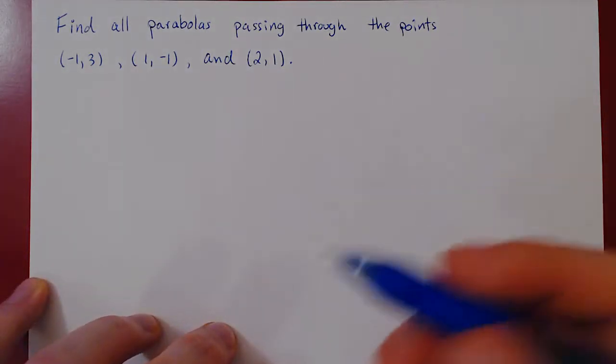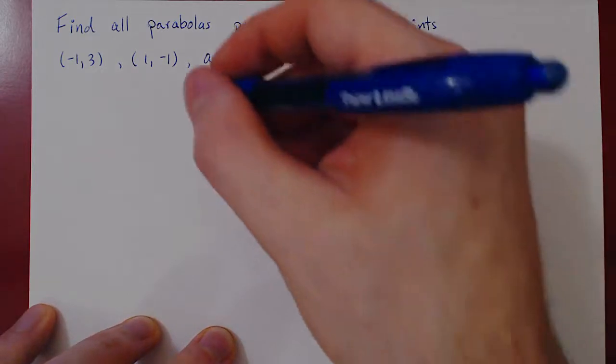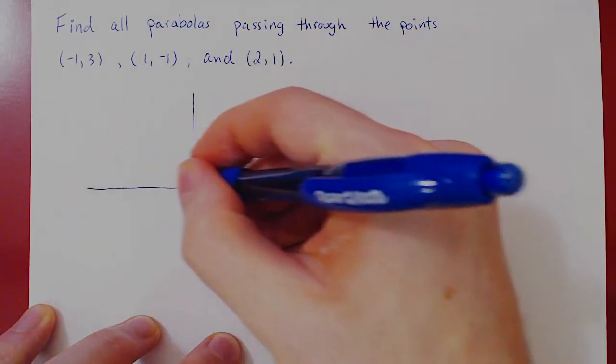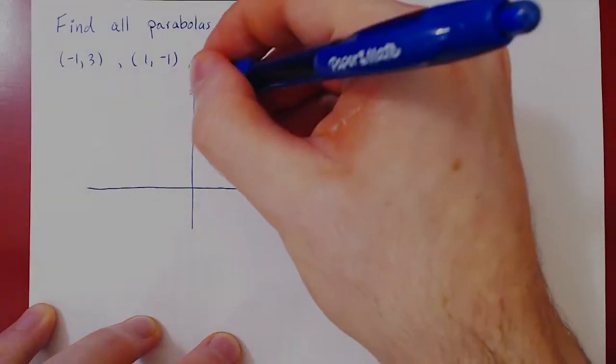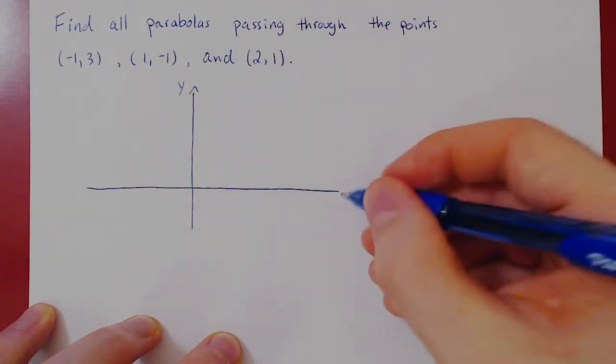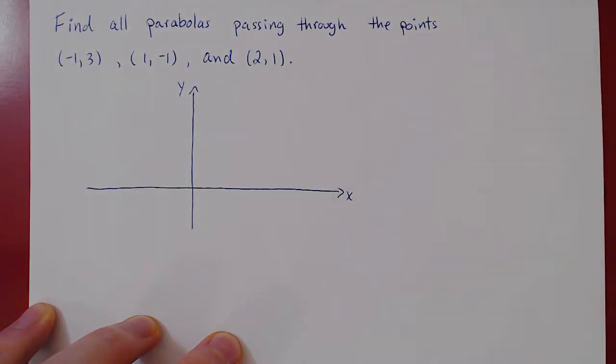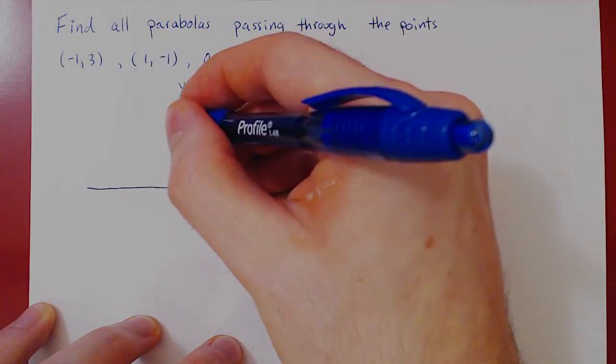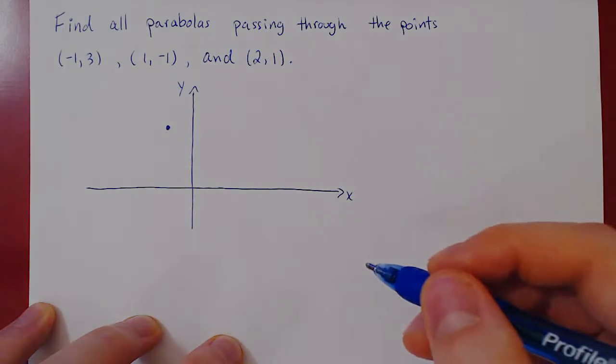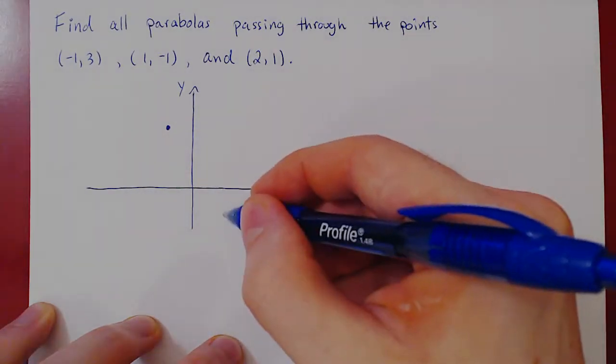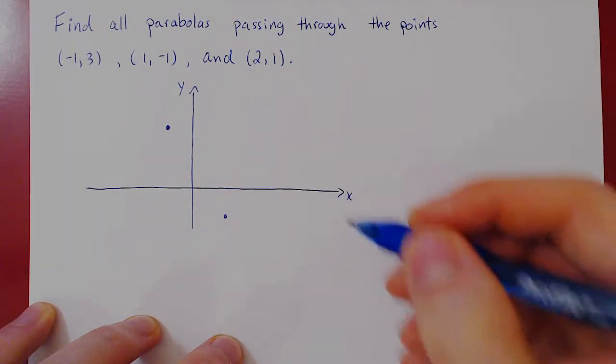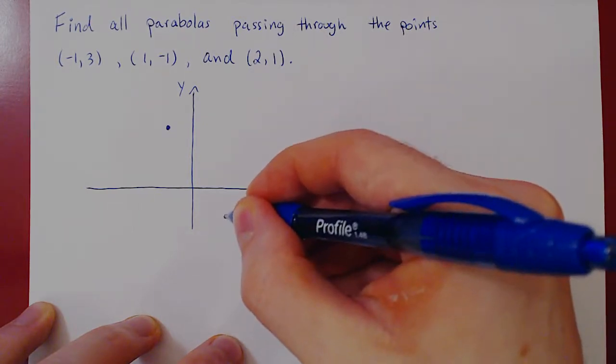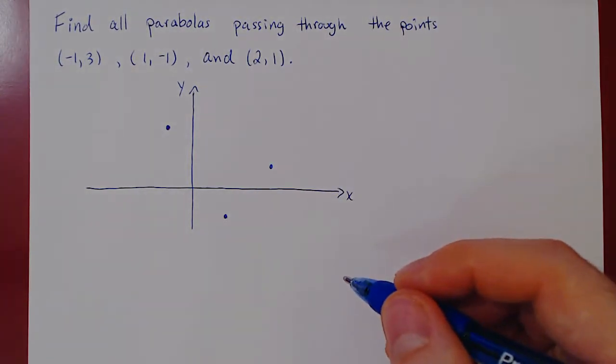So first, let's try and visualize what the question is asking for. Look at the Cartesian plane. And we're given three points. The first point, negative one, three. The second point, one, negative one. And the third point, two, positive one.